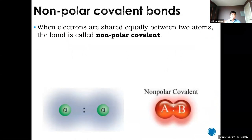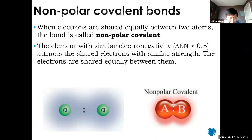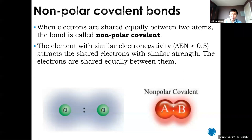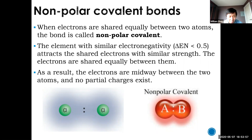A nonpolar covalent bond simply means electrons are shared relatively equally. If you have a similar electronegativity — a difference less than 0.5 — the difference is too small to have any significant effect. Effectively, the electrons are equally shared between the two atoms and found exactly in the middle. So you don't have any partial charges; the charge is uniformly distributed across the entire molecule.